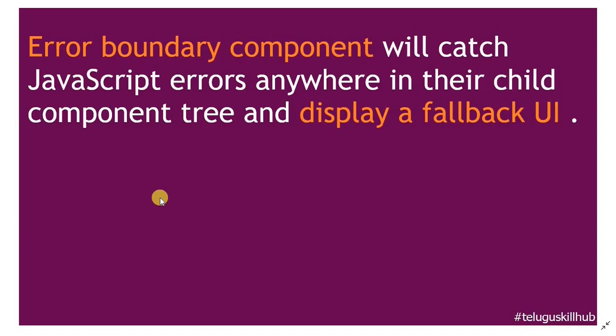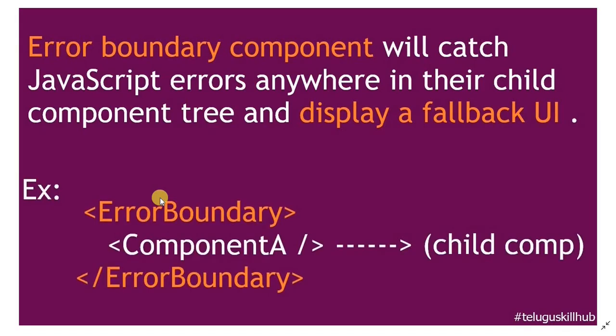The Error Boundary component will catch JavaScript errors anywhere in the child component tree and display a fallback UI. We should wrap the child component tree under the Error Boundary component — the Error Boundary is the parent component, and whatever we wrap inside it will be considered as a child component.